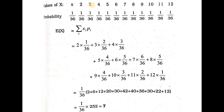For a sum of 3, one die shows 1 and the other shows 2, or one die shows 2 and the other shows 1 — so there are 2 chances. For a sum of 12, both dice must show 6, so there is only 1 chance. The total sample space is 36 items, so probability of each sum is its count divided by 36.